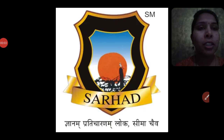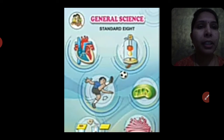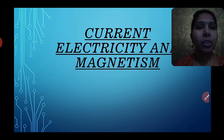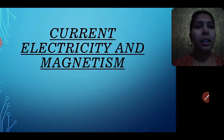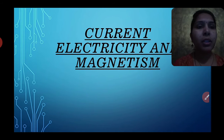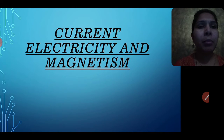Hello students, welcome to our class. Today we continue this lecture for Standard 8, and our subject is General Science. In the last few lectures we completed three lessons in our textbook. Our next topic is the fourth one: Current Electricity and Magnetism.